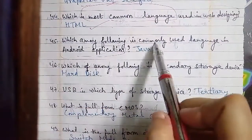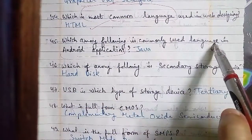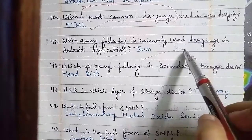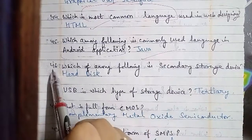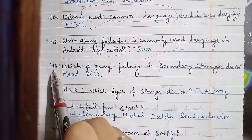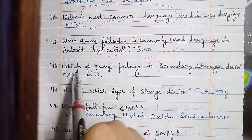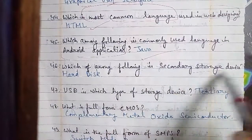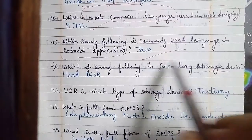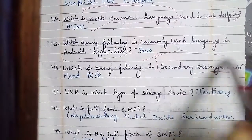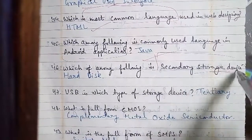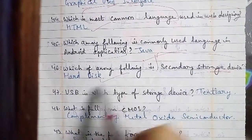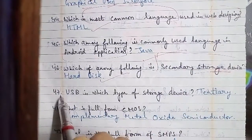Question number 46: which among the following is a secondary storage device? The answer is hard disk. Question number 47: what type of storage device is USB? USB is a tertiary storage device.